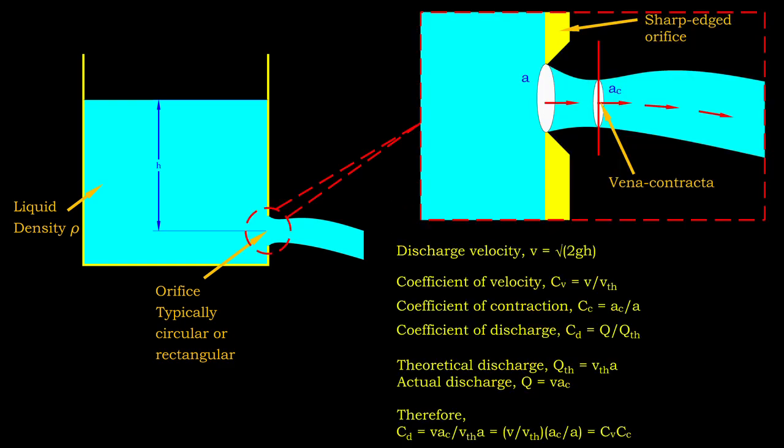Considering a sharp edge orifice, liquid in the container is discharged as a free jet. At the part where the flow direction is perpendicular to the plane of the orifice, the cross-sectional area of the free jet is the smallest. This part is also known as vena contracta.